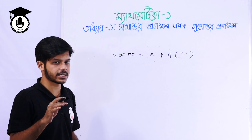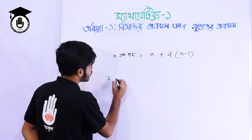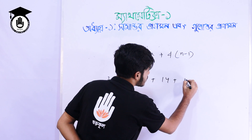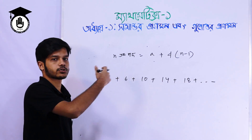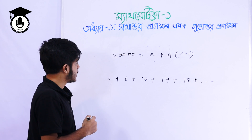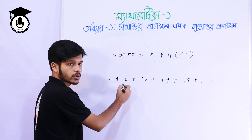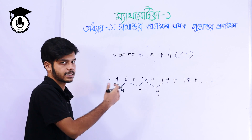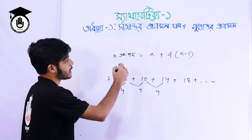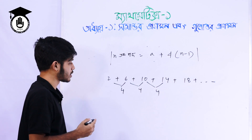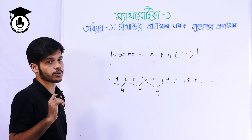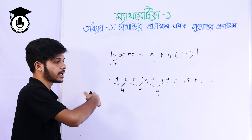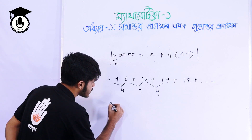With n is equal to n, 10 plus 14 plus 18 — this is the same thing, and this means the same thing. What do I have to learn? 2 is equal to 4. This is the same thing.